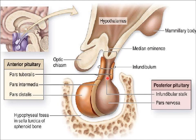The posterior pituitary is actually a continuation of the diencephalon. It develops embryologically from there, and that is why it is known as neurohypophysis — it is mainly composed of nerve tissue. The adenohypophysis, present anteriorly, has a different embryological origin compared to the posterior part. Both of these two parts are derived from different embryological structures.